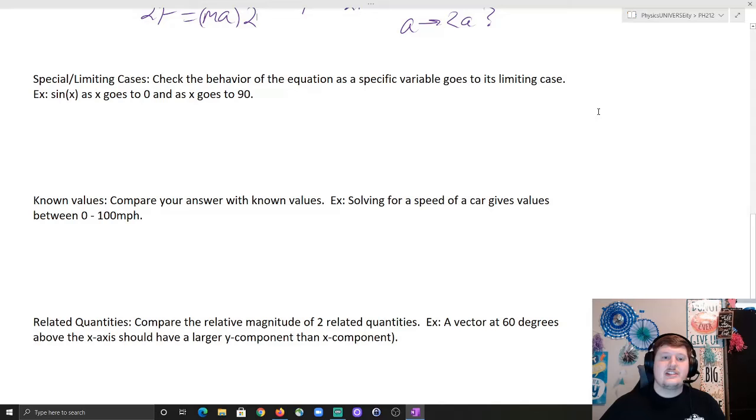Special or limiting cases, check the behavior of the function as a specific variable goes to its limiting case. For example, sine as x goes to zero and as x goes to 90. Great. One of the best things that we know is that for something traveling down a ramp, I note that the acceleration is equal to g sine theta, assuming no friction. Based on where your angle is also.